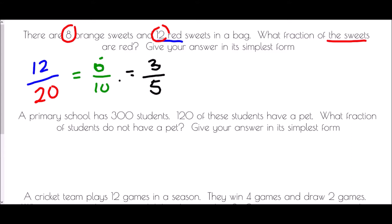In the second example, a primary school has 300 students and 120 of these have a pet. What fraction of students do not have a pet? Give your answer in its simplest form. The key here is that 120 have a pet, but we want the fraction who do not have a pet.